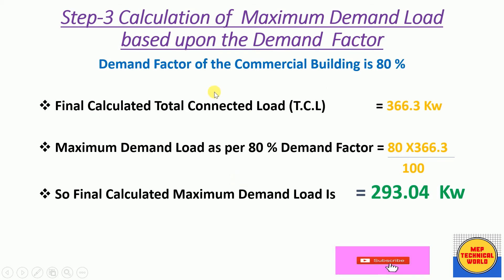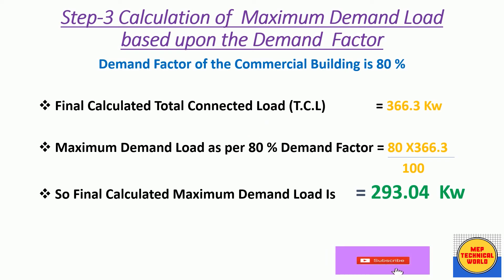Why do we calculate maximum demand load? In a hotel or any other building, not all loads are connected to the power supply 24 hours a day. During daytime, lights may be switched off, and at night some machines are also turned off. So all loads are not connected simultaneously at any given time. Calculating the maximum demand load helps us determine the real size of the diesel generator. If we sized the DG based on total connected load, the DG size and cost would be unnecessarily increased.